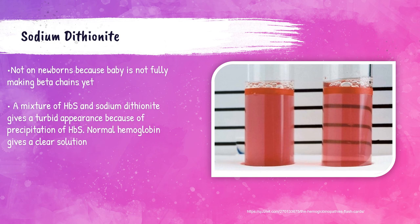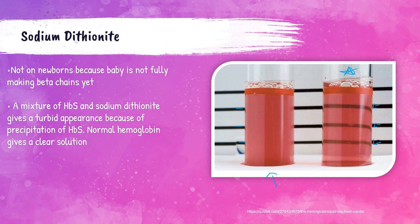The sodium dithionite solubility test determines if hemoglobin S is present. The patient's blood is mixed with sodium dithionite — if hemoglobin S is present, it will precipitate out, causing a turbid appearance. Normal hemoglobin gives a clear appearance; only hemoglobin S causes that turbidity. This test cannot be performed on newborns because they have not fully begun to make beta chains yet. A positive sodium dithionite test means you cannot see the lines behind the tube, whereas a negative test shows clear lines behind the tube.